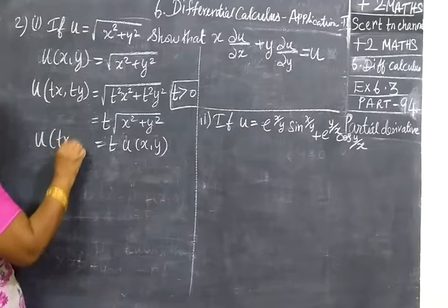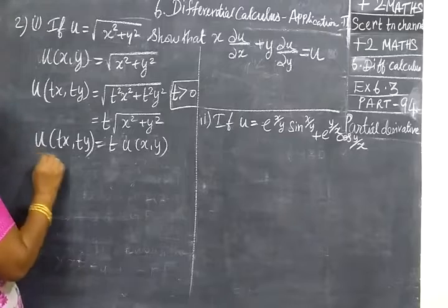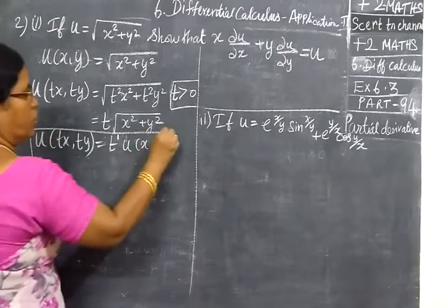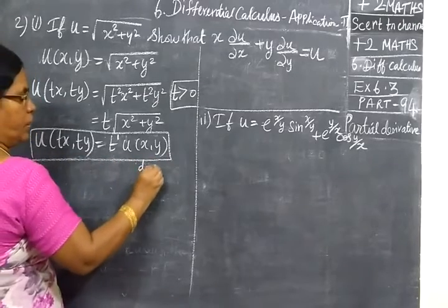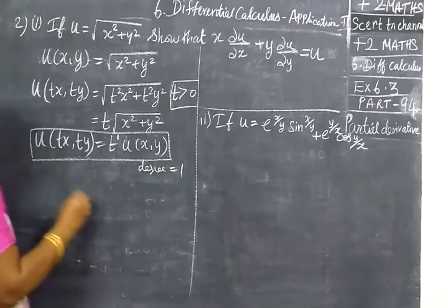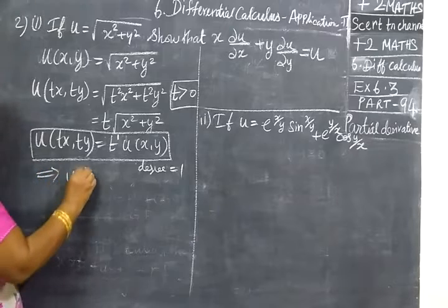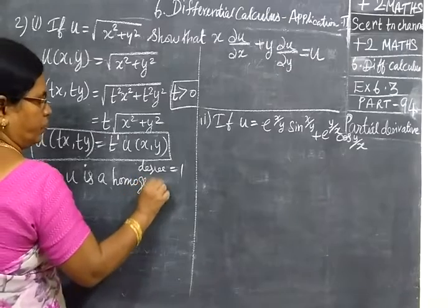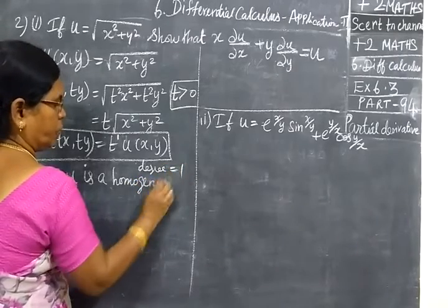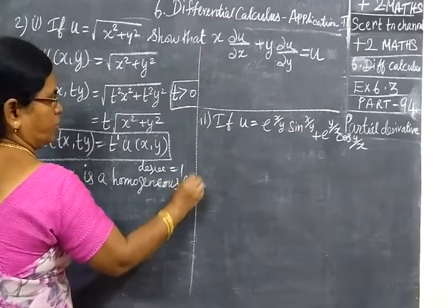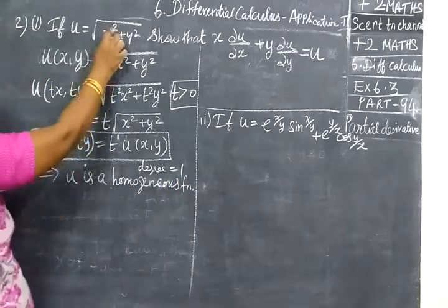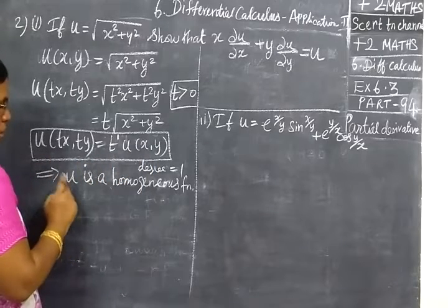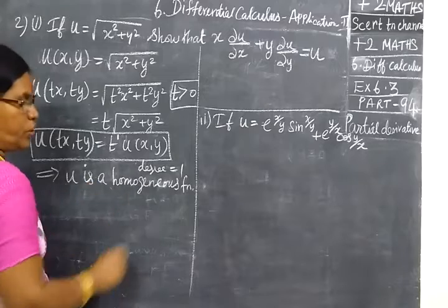Here, we are writing u of tx, ty. The degree is equal to 1, which implies u is a homogeneous function. So the condition is satisfied, and we say u is a homogeneous function.